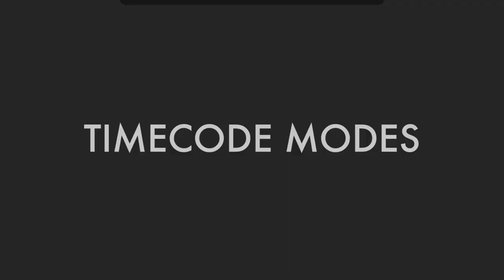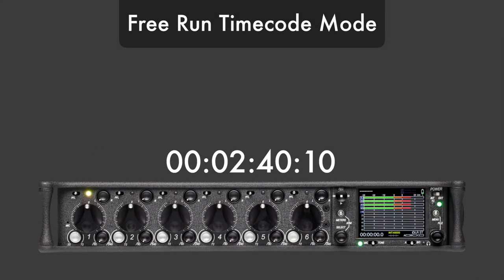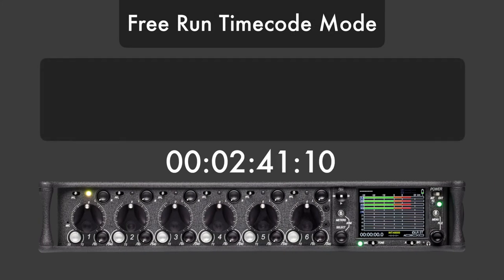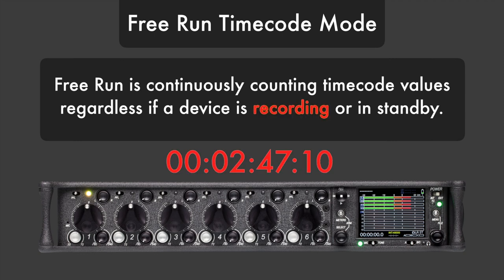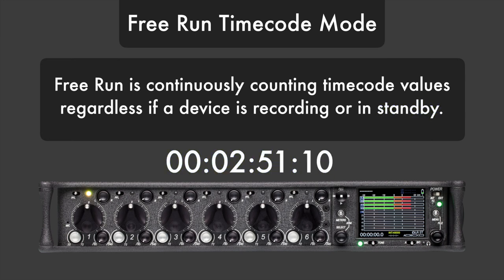Timecode modes. Free run timecode mode. Free run is continuously counting timecode values, regardless if a device is recording or in standby. Free run is the most commonly used timecode mode in double system production.